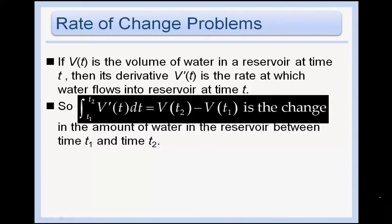Of course, here's our little application. If v(t) is the volume of water in a reservoir at time t, then its derivative, v prime of t, is a rate at which the water flows into the reservoir at time t. Basically, what's in black here is very important. You have to be able to interpret something like, you know, they might ask you, what is an interpretation of this? And you should be able to say, well, that is the change in the amount of water in the reservoir between time 1 and time 2.